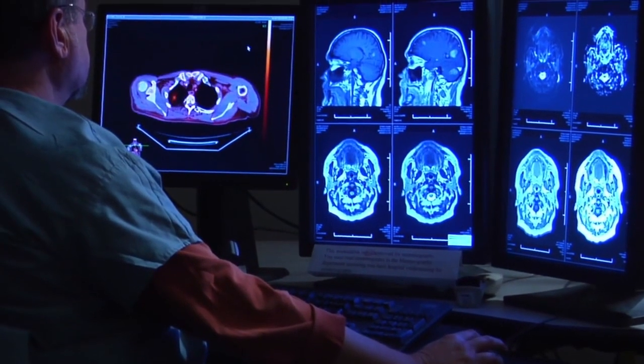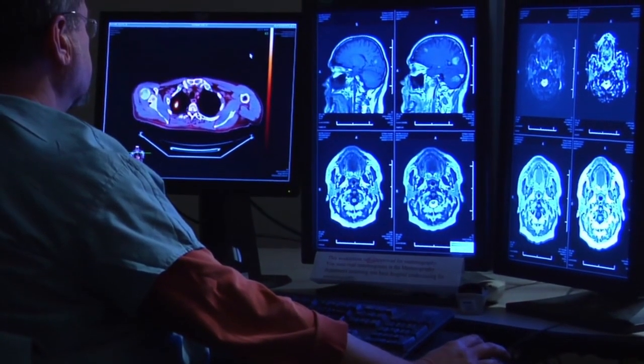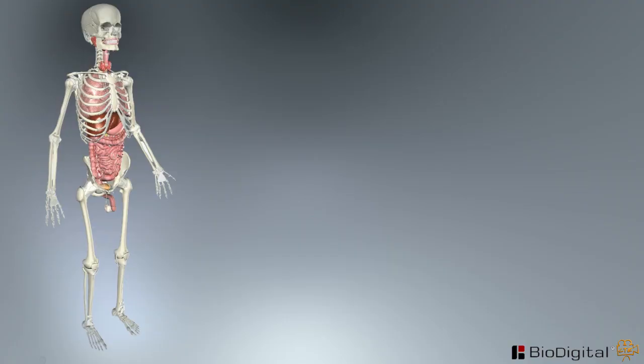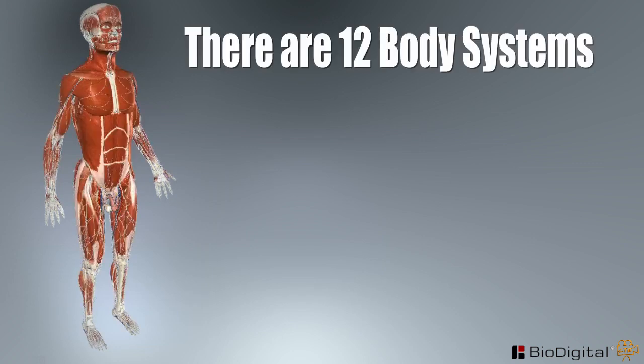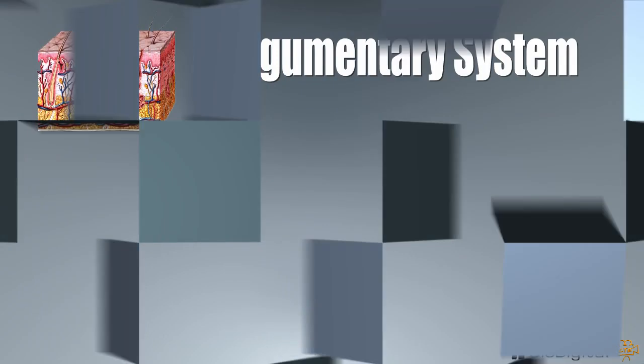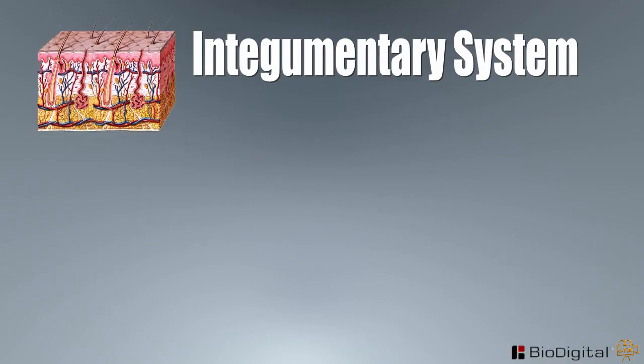Now that we have completed the mapping of the body, we will now begin our journey through each of the body systems, of which there are 12. Our first journey begins with the integumentary system.